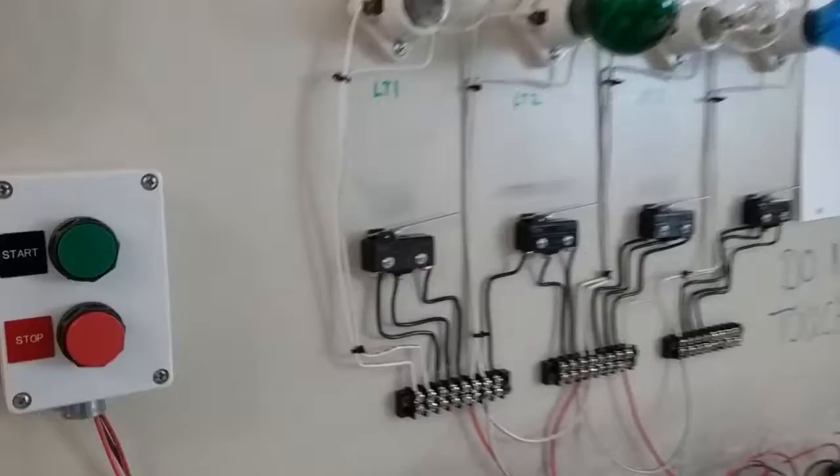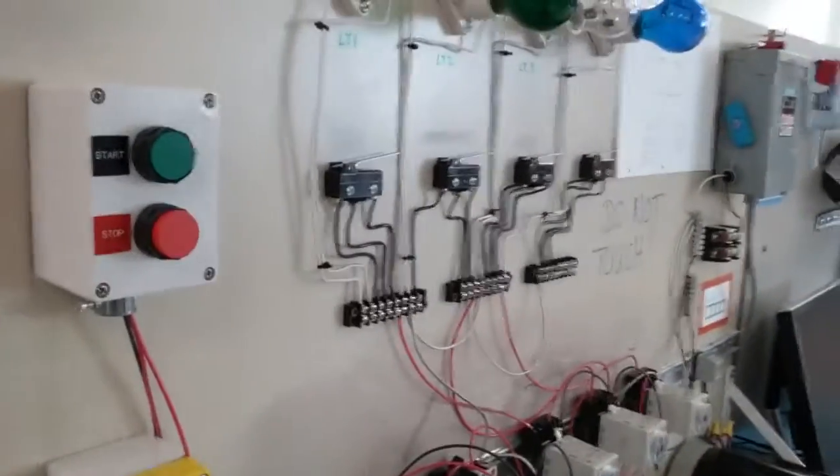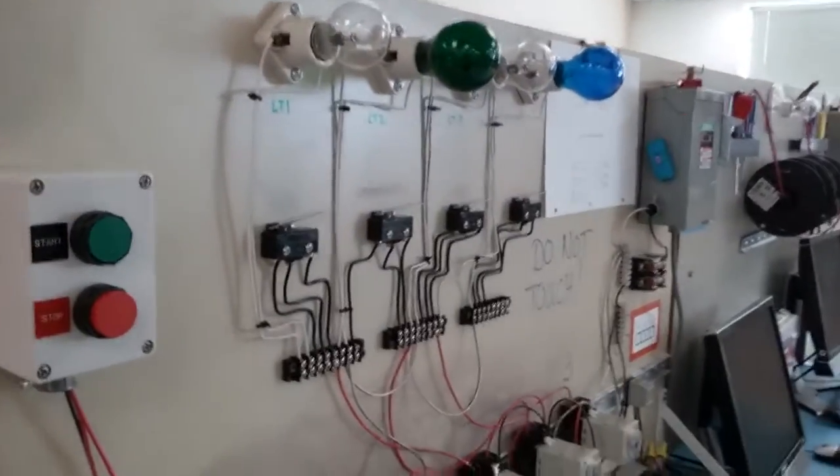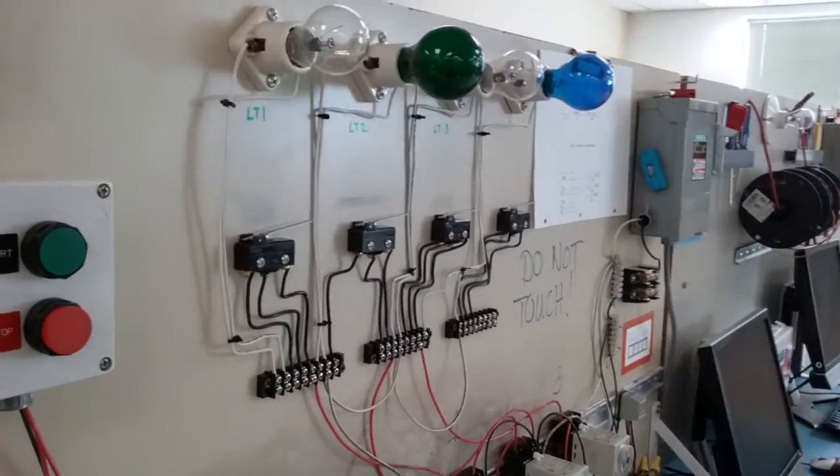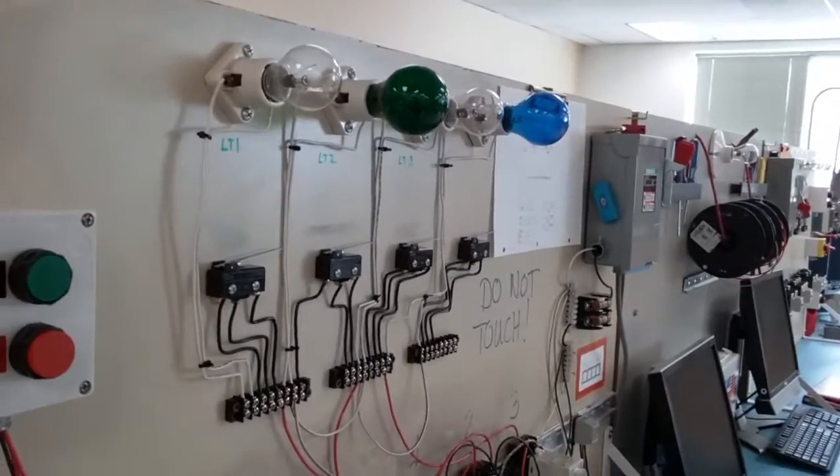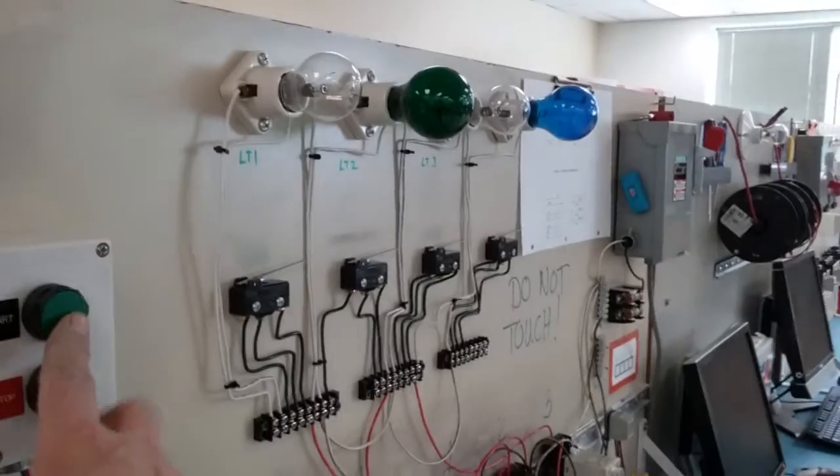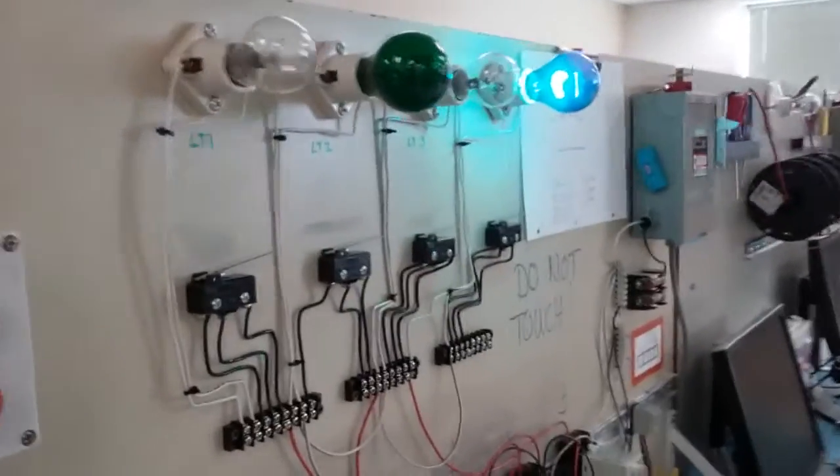Over here we have our start-stop switch. So once we press that, then we'll start the timing cycle and we'll see the lights start to time through their timing. I think it's set to a couple of seconds per light, so let's go ahead and do that. There we go.